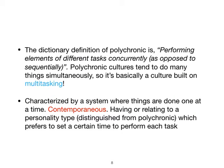By dictionary definition, polychronic means performing elements of different tasks concurrently as opposed to sequentially. Multiple things can happen at the same time, and polychronic cultures tend to do many things simultaneously. It's basically a culture built on multitasking — people are doing multiple things at a time: talking, working, laughing — that's how it goes.